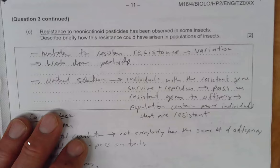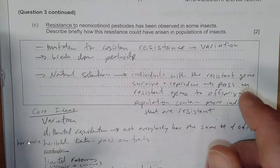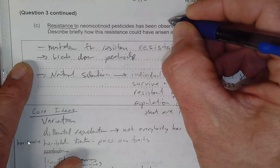Resistance to pesticides has been seen. So how does that happen? When we're looking at resistance, the first thing you should think about is natural selection.